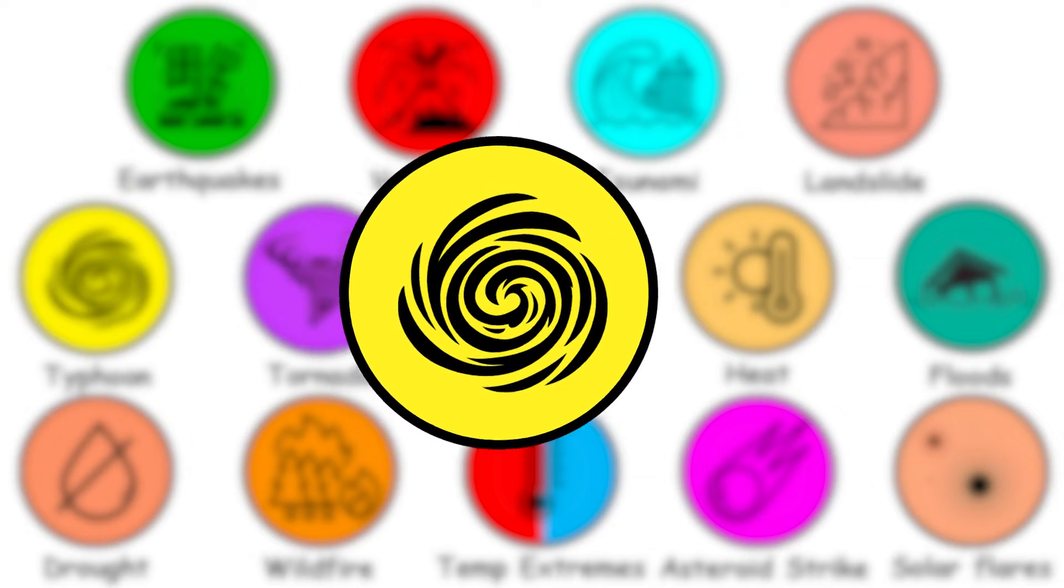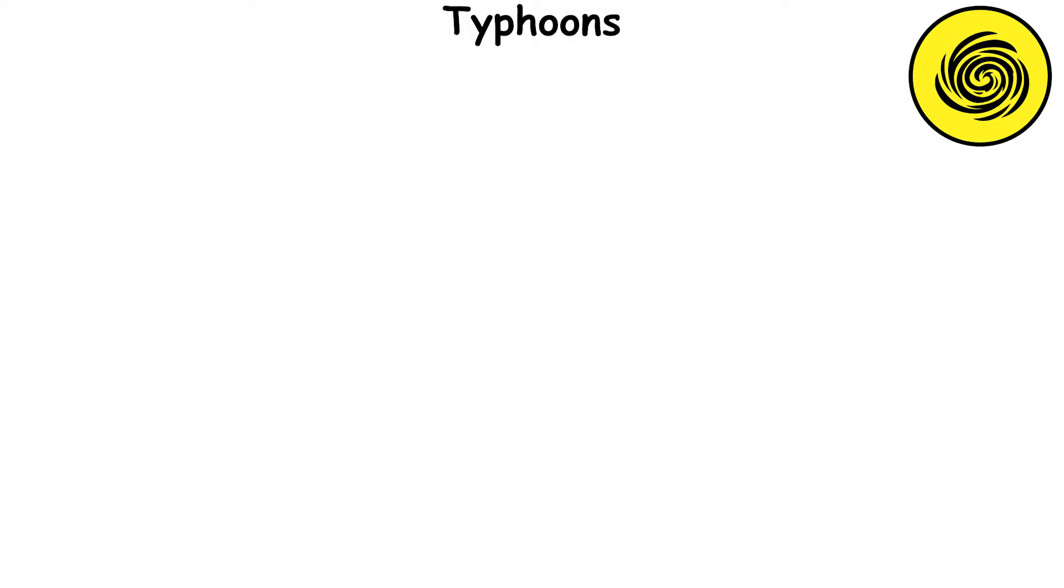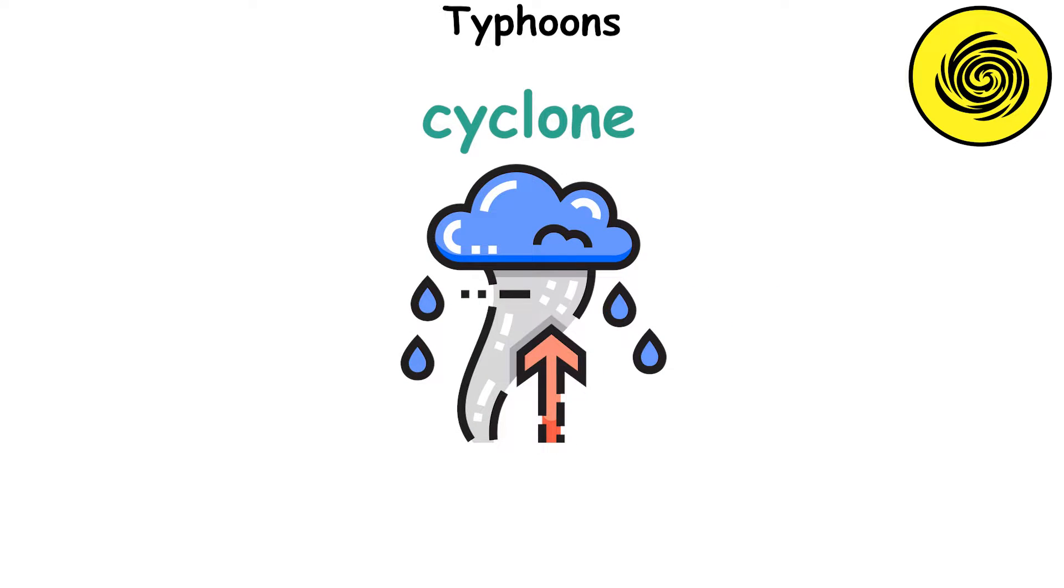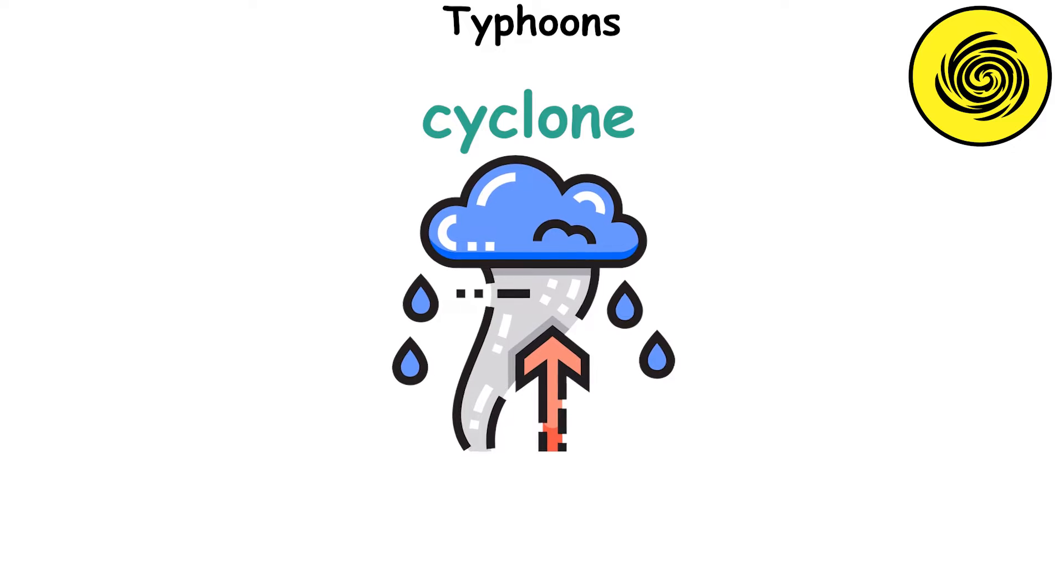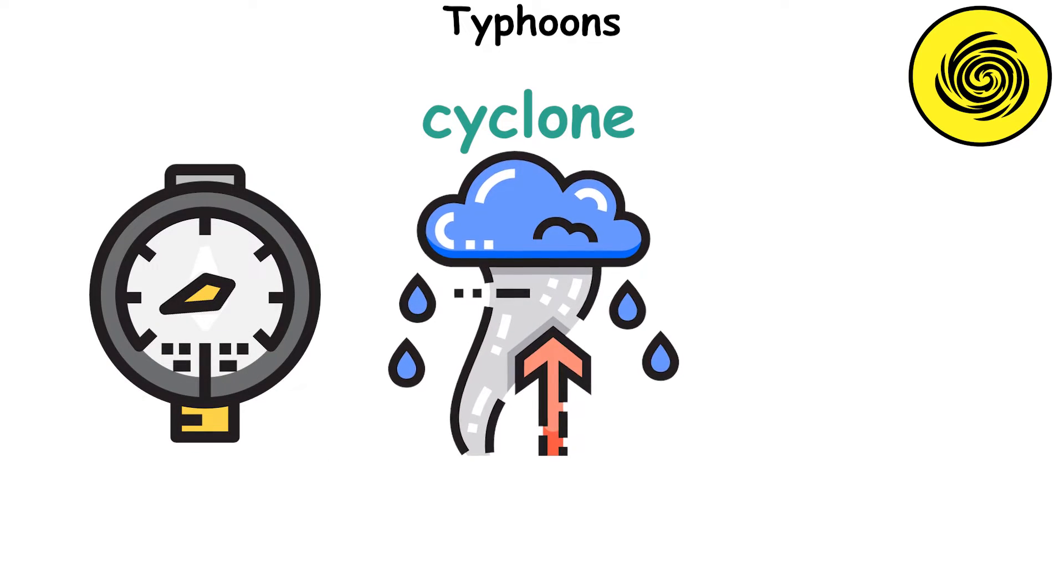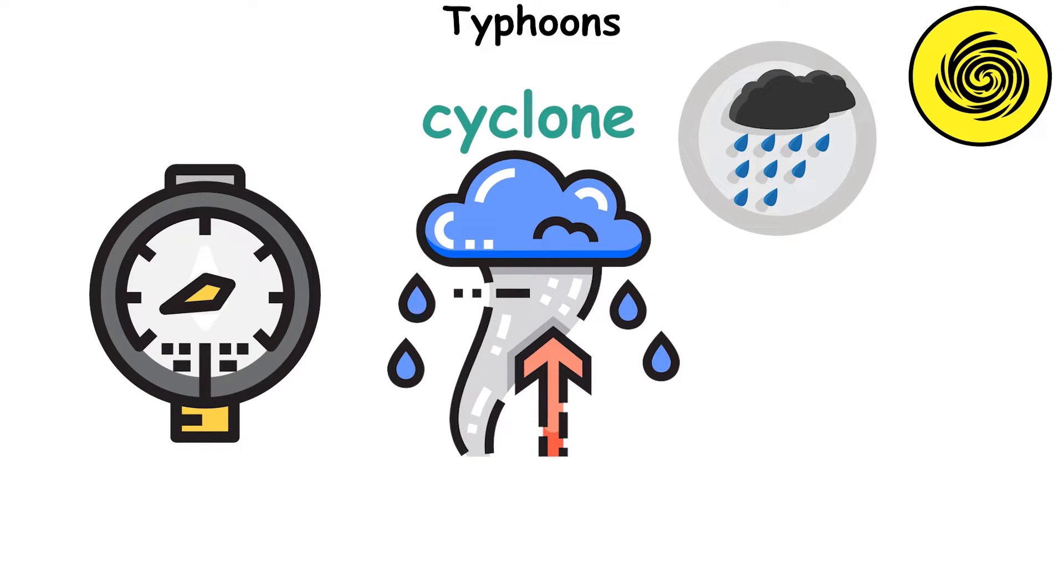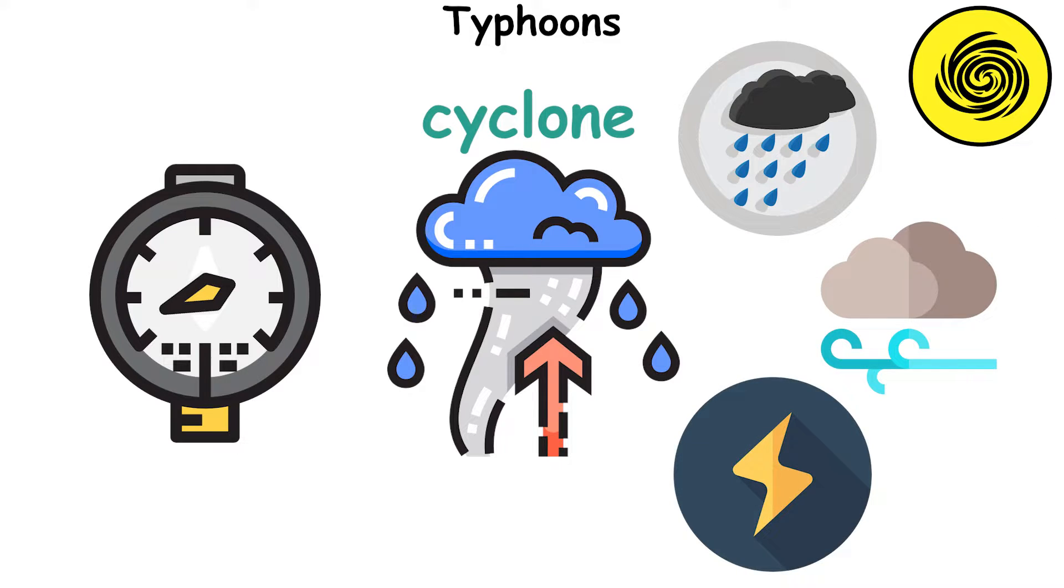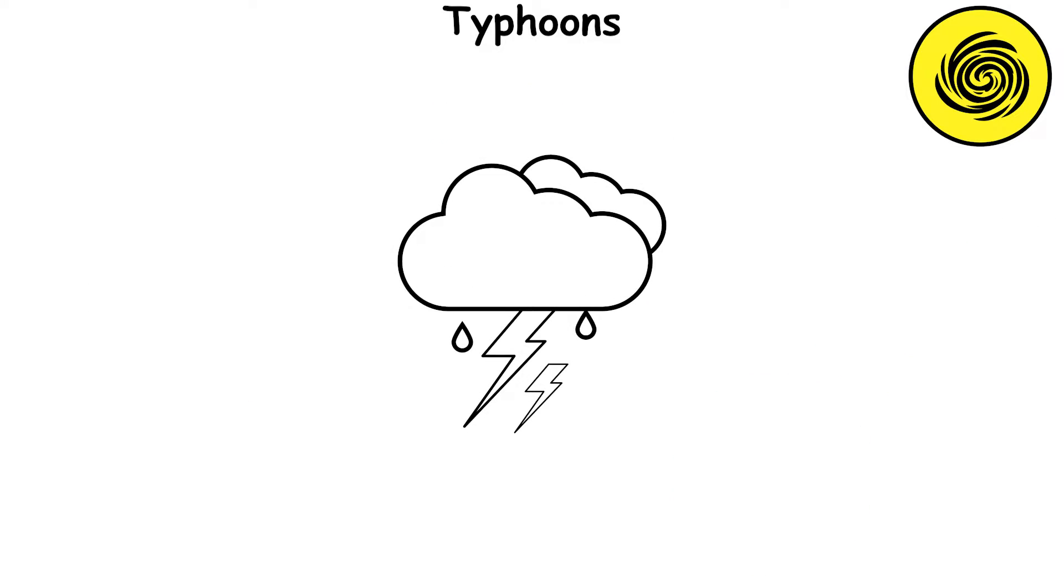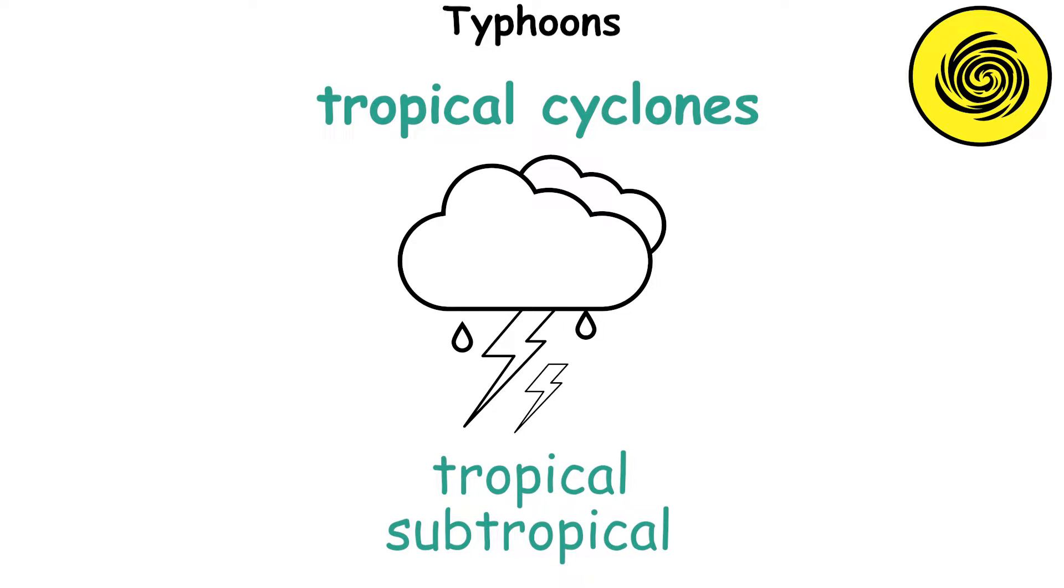A hurricane-slash-typhoon-slash-cyclone are all destructive storms, but there are a few key varieties among them. Cyclone is a general term for a large storm system that rotates around a center of low atmospheric pressure. These air masses produce rain, wind and lightning. Storms that occur over tropical or subtropical waters are called tropical cyclones, and they are some of the strongest storms on Earth.